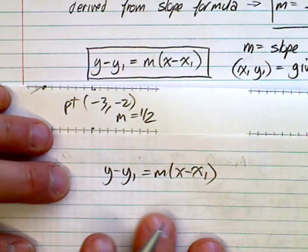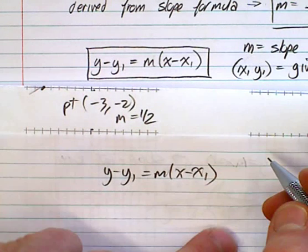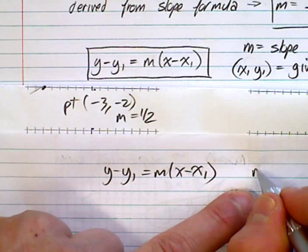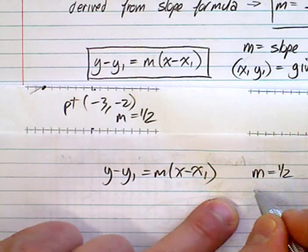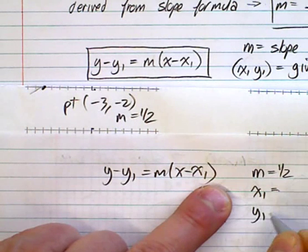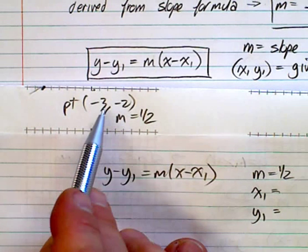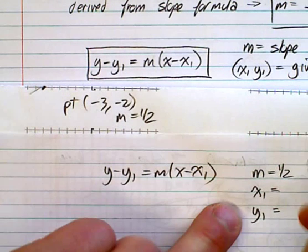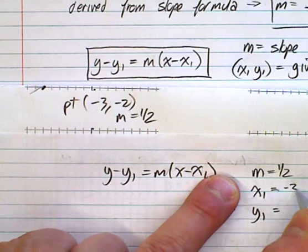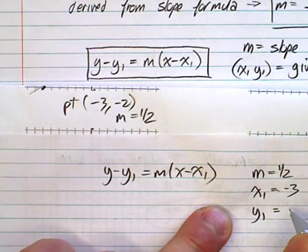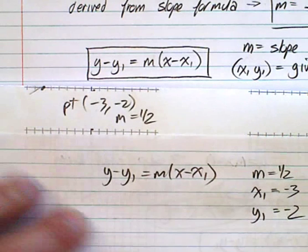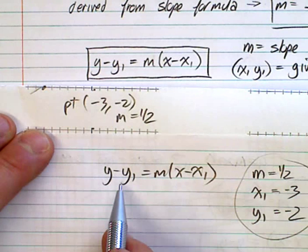We plug those numbers in. My slope is one half. What's your x1? What's your y1? That's the given point. The x1 is minus 3, and the y1 is minus 2. And we plug these values into this equation.